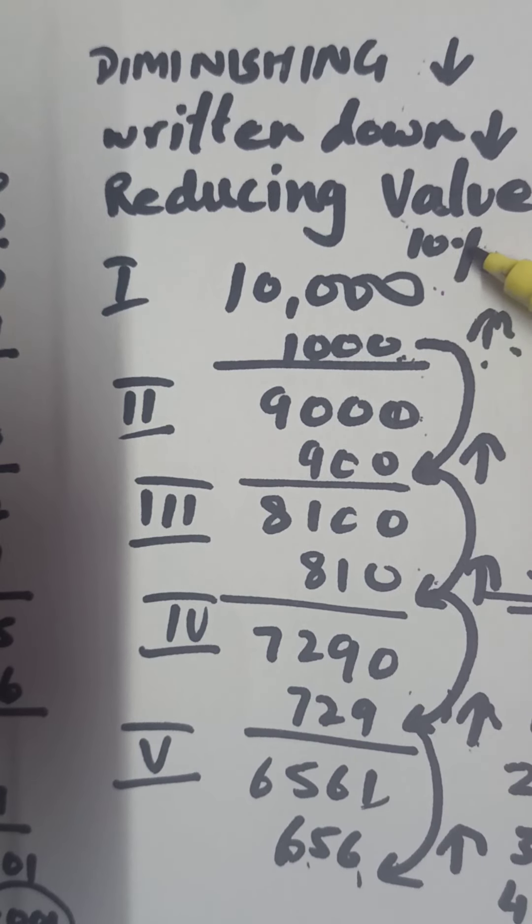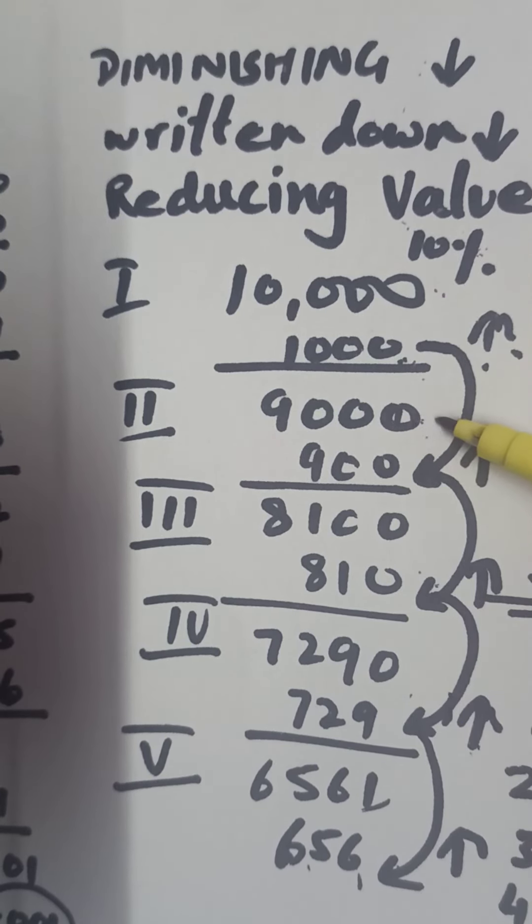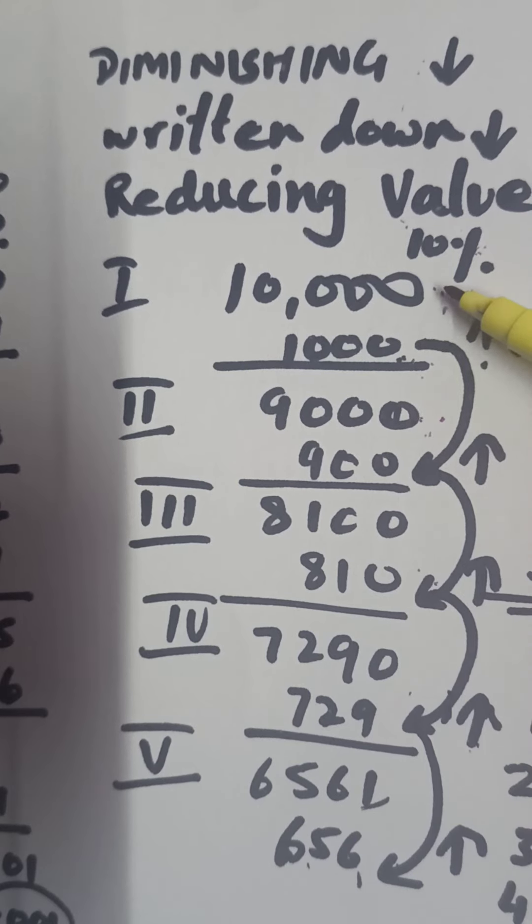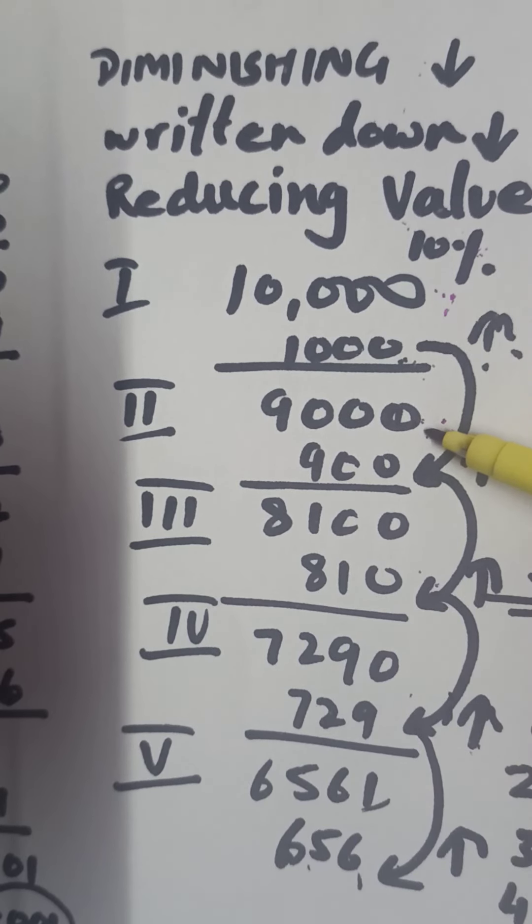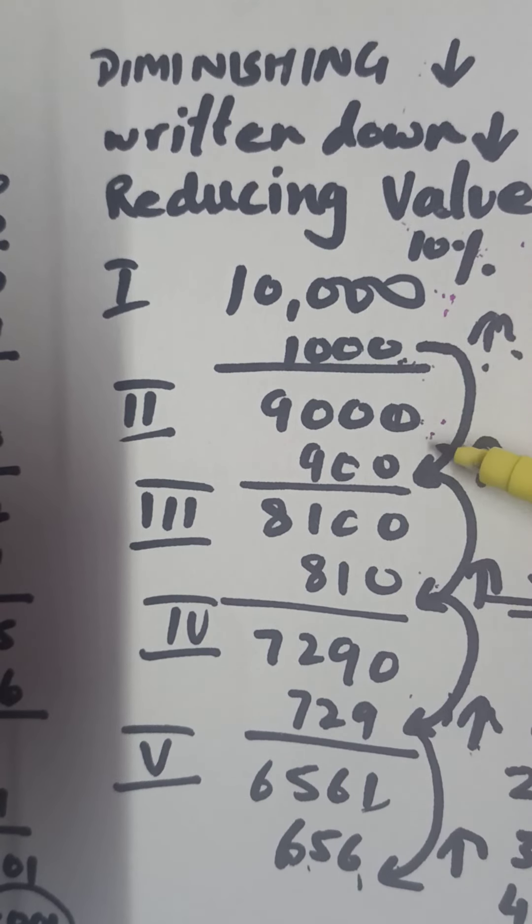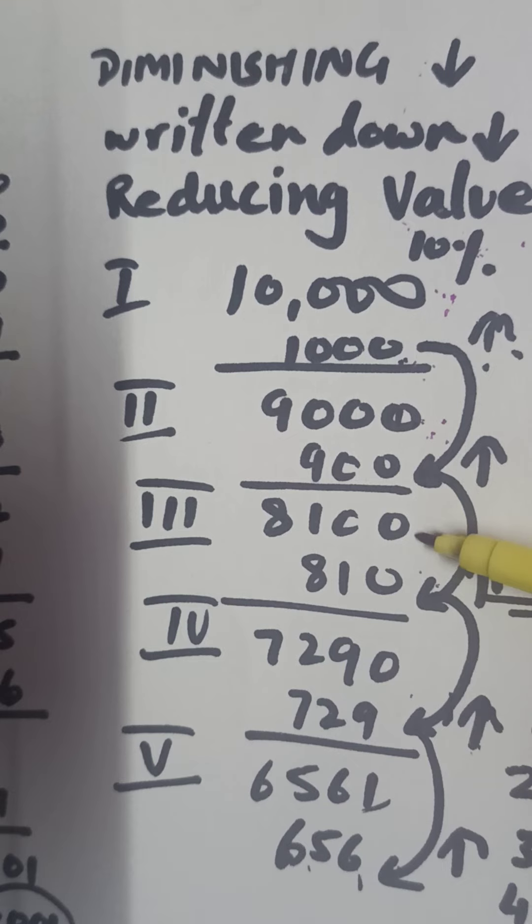It will be 10% of the value reduced in that year. So the reduced value, the diminished value, or the written down value is rupees 9,000. So 10% in the second year on 9,000 reduces this balance to 8,100.